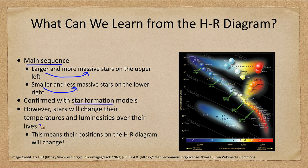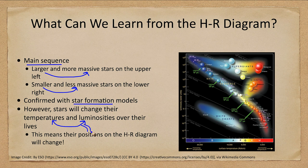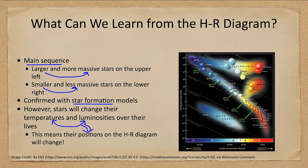Stars do not stay in one spot on the HR diagram over their lives. The temperatures and luminosities will both change, which means their position on the HR diagram will change, and we will see that as evolutionary tracks - paths that stars take over the course of their lives.